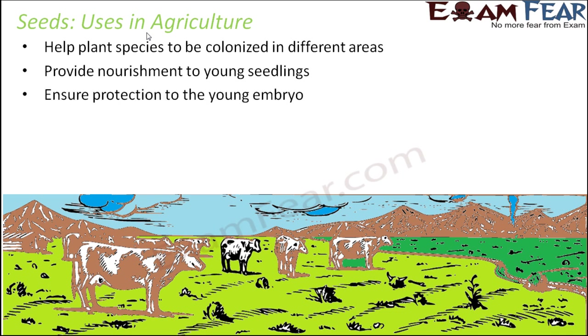Seeds ensure protection to the young embryo. The embryo is present inside the seed, and the seed also has an outer covering — the seed coat — which provides enough protection to the embryo.